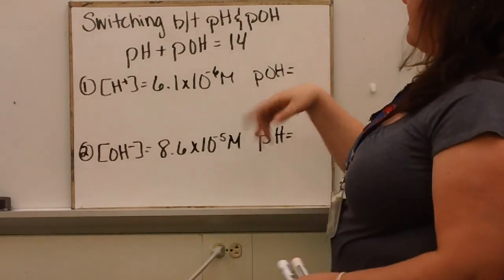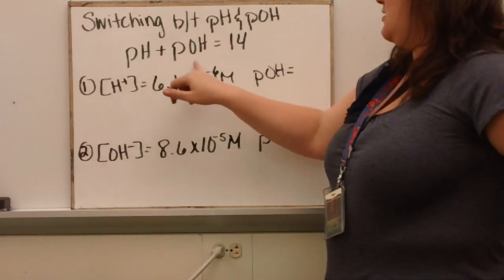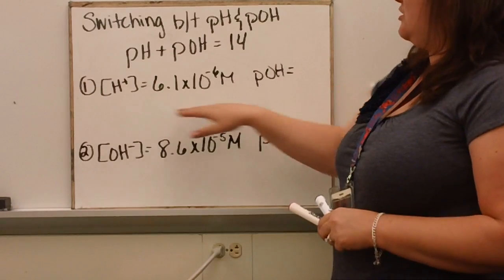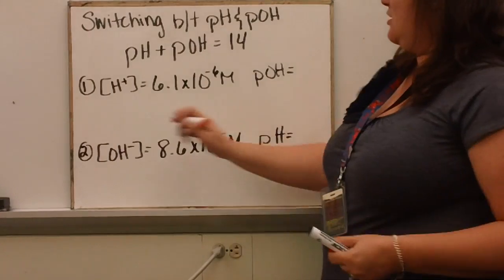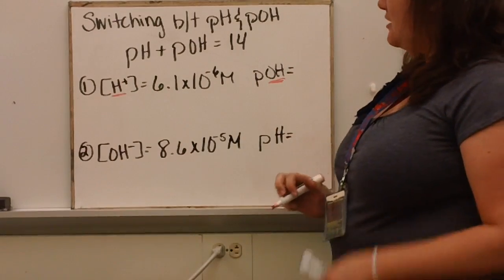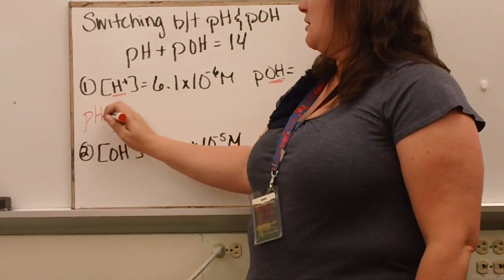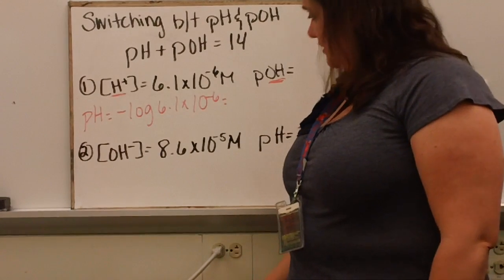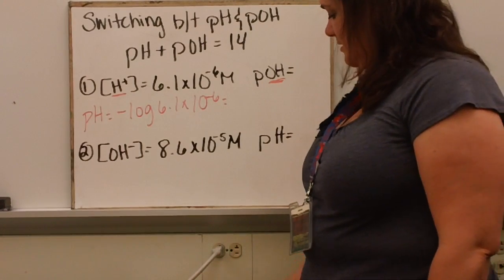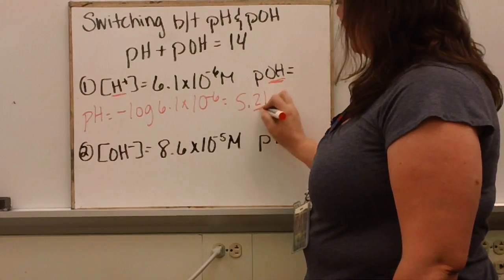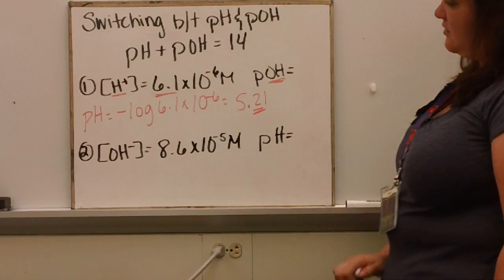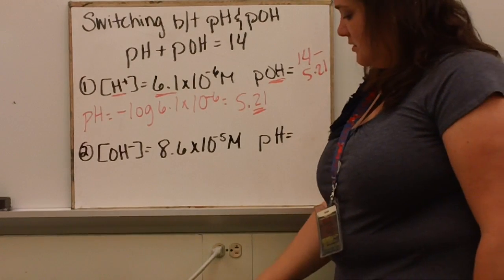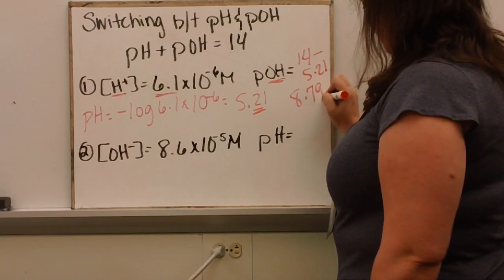Next, we'll talk about how to switch between pH and pOH. Since the pH scale goes from 1 to 14, pH plus pOH equals 14. For example, if the hydrogen concentration is 6.1×10⁻⁶ and we want pOH: first find pH using negative log of 6.1×10⁻⁶, which gives 5.21 (two sig figs). Then pOH = 14 − 5.21 = 8.79.